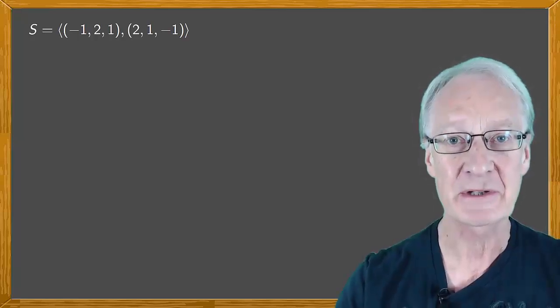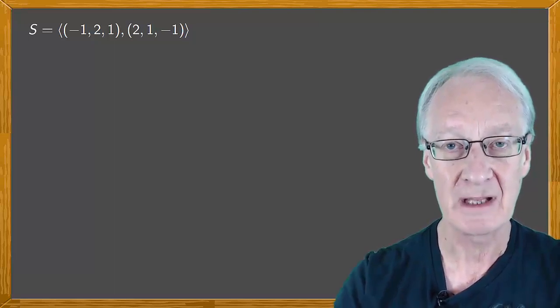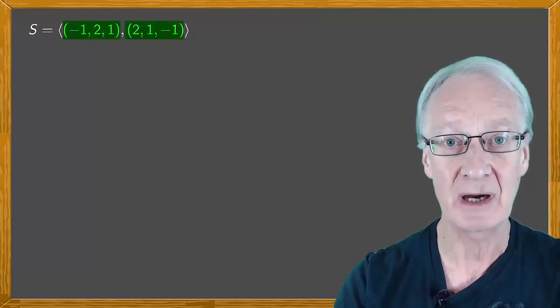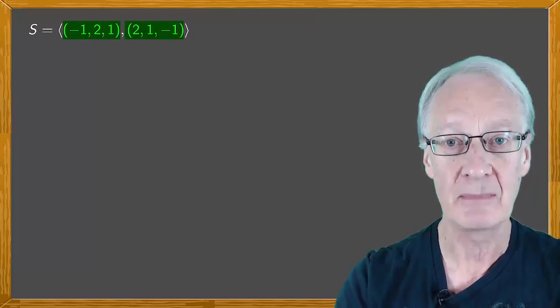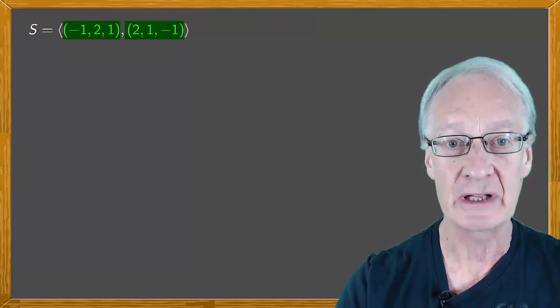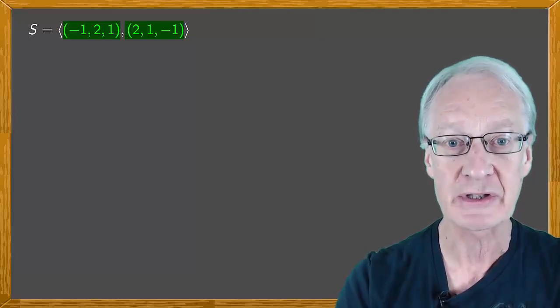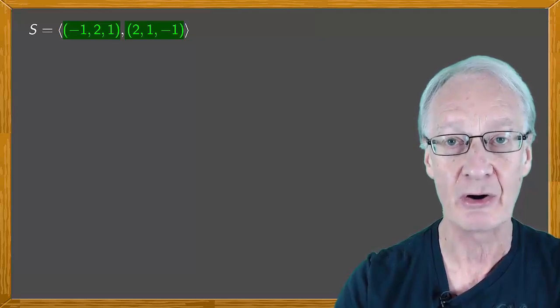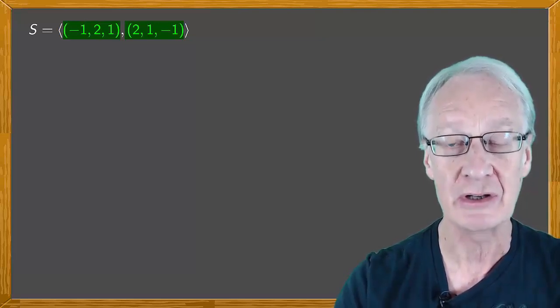Let's consider the subspace S of R³ as shown here. It's the subspace generated by the vectors (-1, 2, 1) and (2, 1, -1). So the set formed by these two vectors constitutes a generator system of S. We're going to obtain their Cartesian equations.